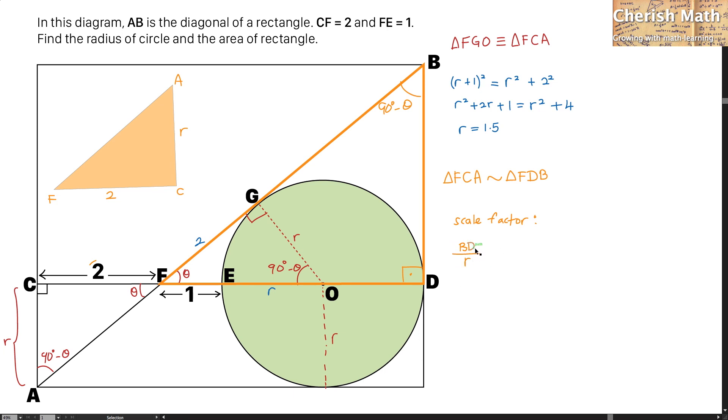If I use FD which is the base length here divided by the similar side of FC which is I denote with 2, this is going to be.